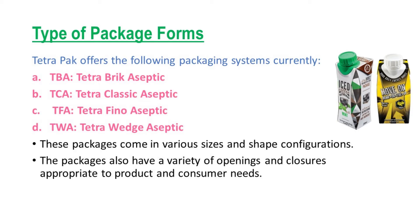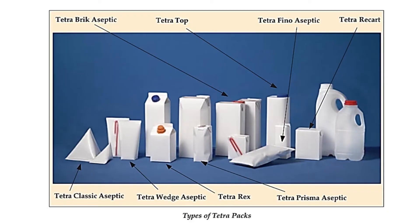Tetra Pak offers the following packaging systems currently: Tetra Breek Aseptic, Tetra Classic Aseptic, Tetra Pheno Aseptic, and Tetra Wedge Aseptic. These packages come in various sizes and shape configurations, and also have a variety of openings and closures appropriate to product and consumer needs. Here you can see different kinds of Tetra Paks.